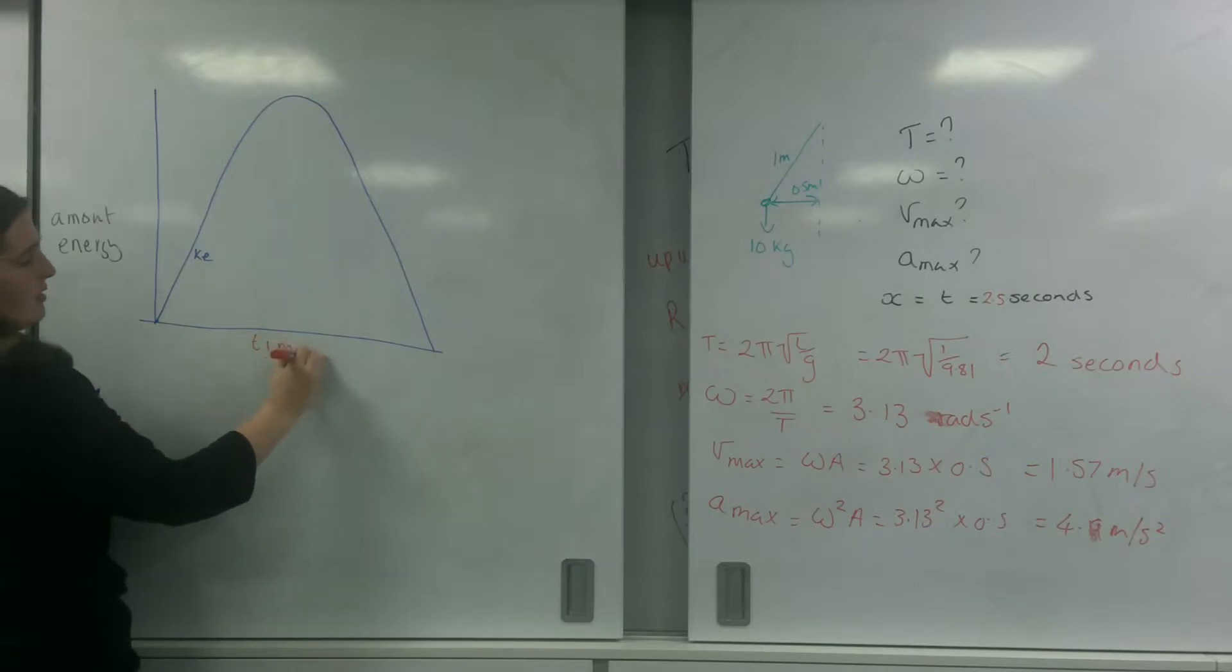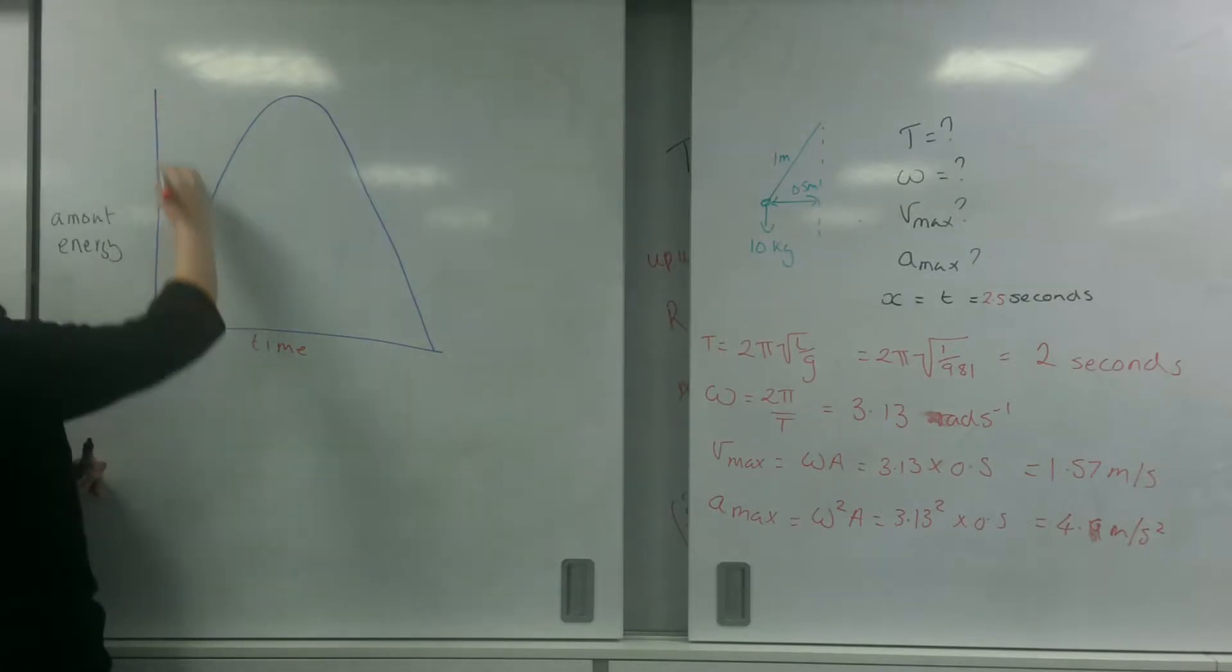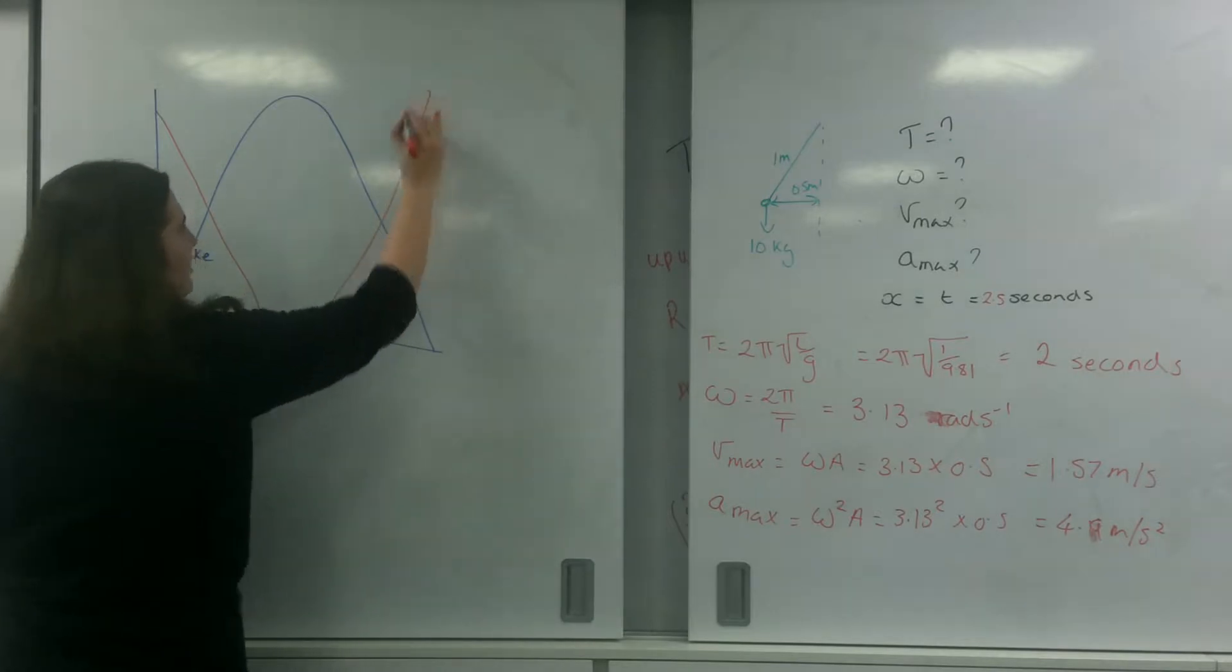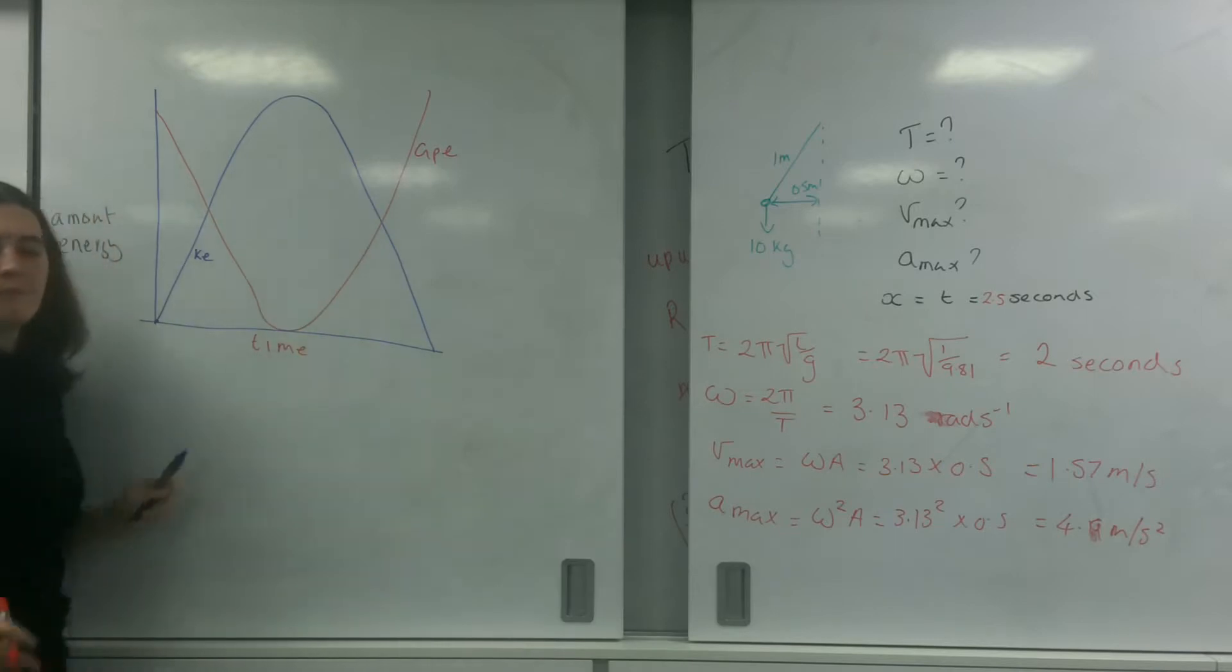So if I write amount of energy here. So this is not potential energy, this is just energy. So this here is my kinetic energy. It starts at zero, goes to a max and goes to zero again. And up here, that is my GPE. My GPE is starting at maximum, going to zero, and going to maximum again.